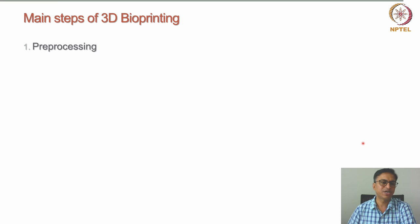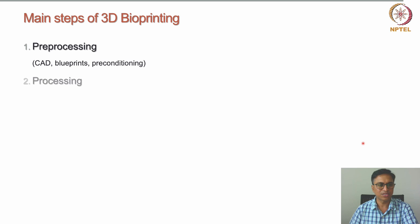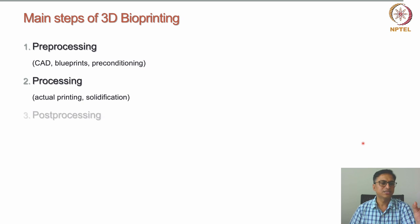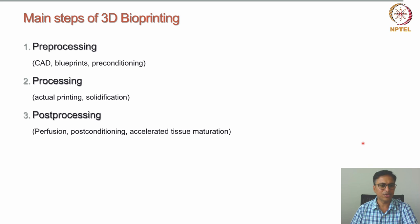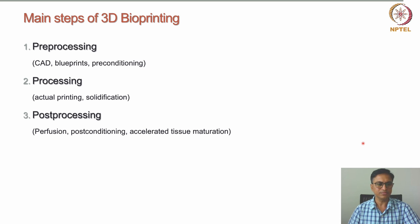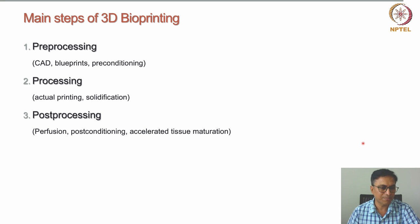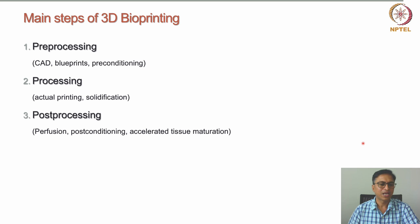The main steps of 3D bioprinting are: first, bio ink development; then actual printing using the CAD file; then solidification or stabilization of the printed structure for stability. In post-processing, tissue maturation takes place — the tissue can be cultured in a bioreactor, providing all necessary conditions for cell survival, and conditions for accelerated tissue maturation can also be applied.